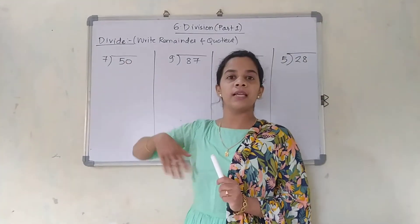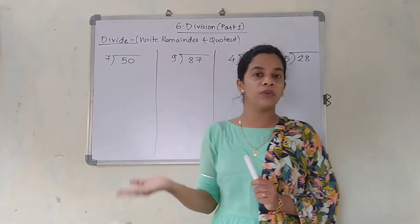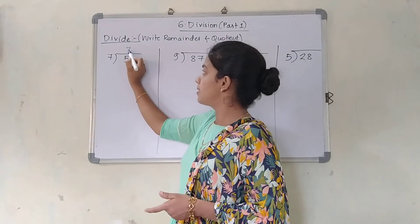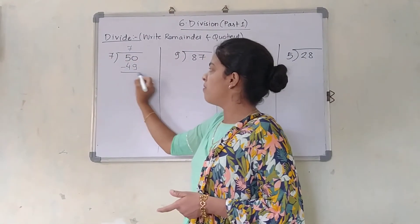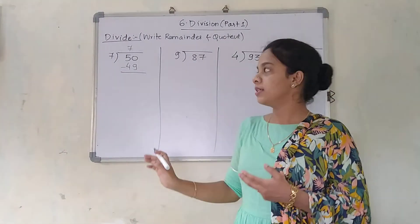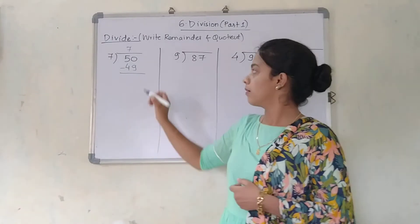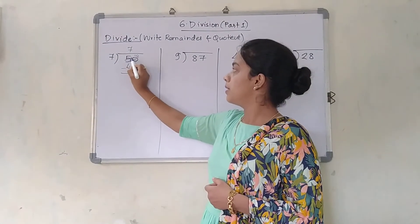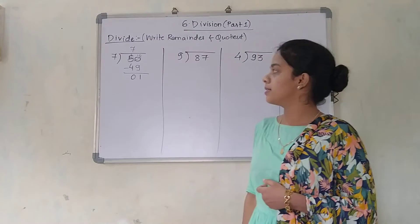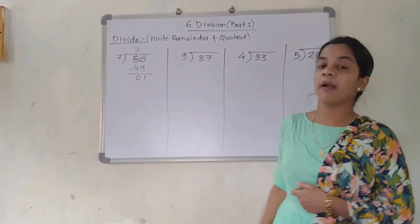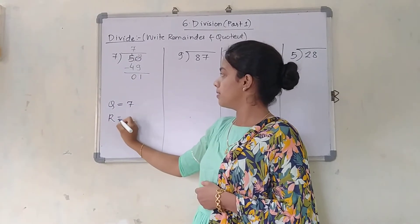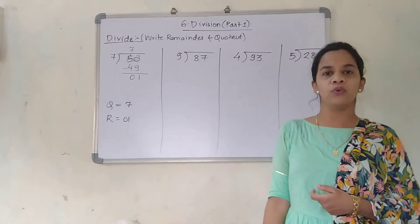56 I have not taken because it is extending — it is going bigger than 50. So which number is near to 50 and less than it? It is 7 sevens are 49. So I am going to take 7 sevens are 49. Every time you will not get an answer that completely divides the number. 50 minus 49: 10 minus 9 is 1, and 4 minus 4 is 0. So the remainder is 1. The quotient is 7 and the remainder is 1.